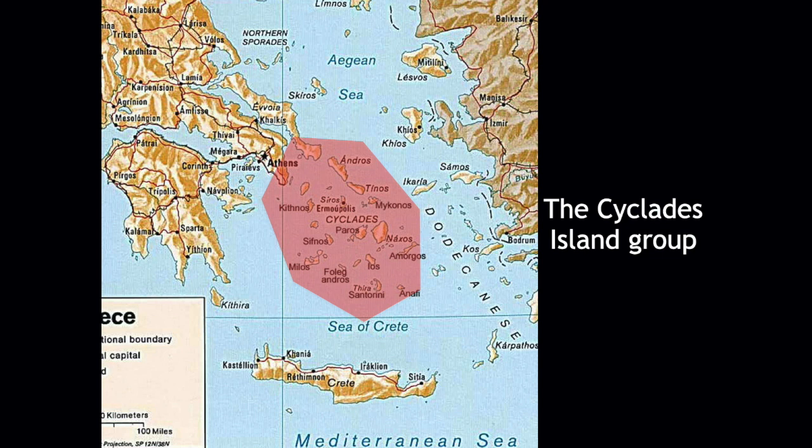Cycladic art refers to art that comes from this little island group known as the Cyclades. You can see that it's off the mainland of Greece, and it is north of the giant island of Crete, which is the next lecture about the Minoan civilization. There were many Neolithic settlements on these islands during the early Bronze Age, from about 3000 to 2000 BCE.